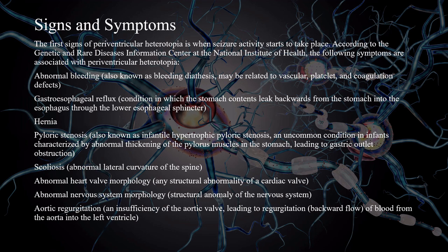The first signs of periventricular heterotopia is when seizure activity starts to take place. According to the Genetic and Rare Diseases Information Center at the National Institutes of Health, the following symptoms are associated with periventricular heterotopia: abnormal bleeding, gastroesophageal reflux, hernia, pyloric stenosis, scoliosis, abnormal heart valve morphology, abnormal nervous system morphology, and aortic regurgitation.